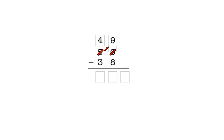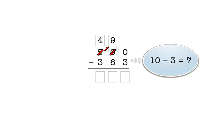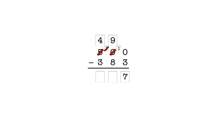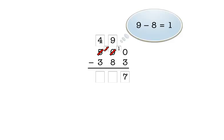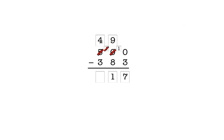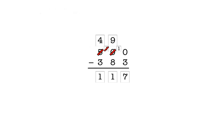In the ones column, we have ten minus three, which is seven. So, we enter seven here. In the tens column, we have nine minus eight, which is one. So, we enter one in the answer box in the tens column. In the hundreds column, we have four minus three, which is one. So, we enter one in the answer box for the hundreds column. Our final answer is 117.